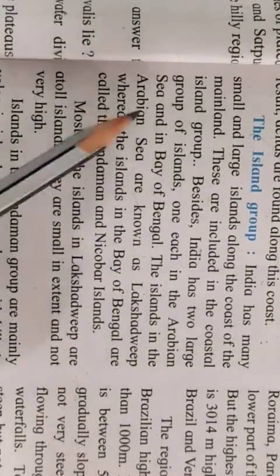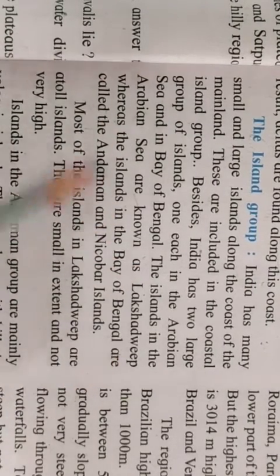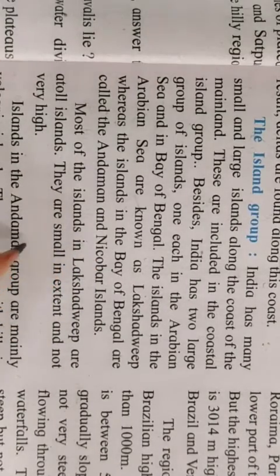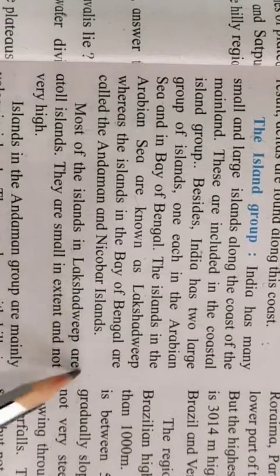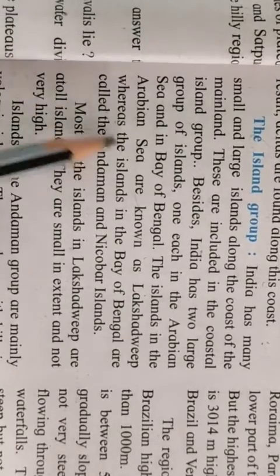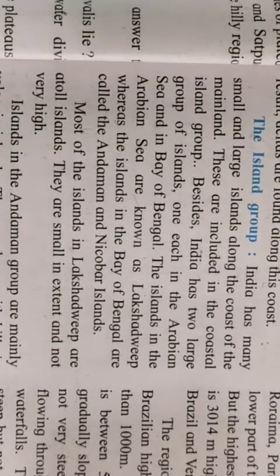The islands in the Arabian Sea are known as Lakshadweep Islands whereas the islands in the Bay of Bengal are called the Andaman and Nicobar Islands. Most of the islands in Lakshadweep are atoll islands. They are small in extent and not very high. Now what are atoll islands? Now let me just explain.